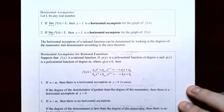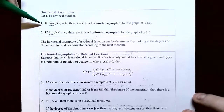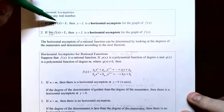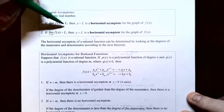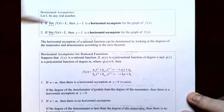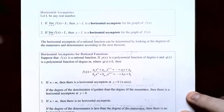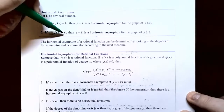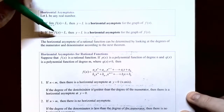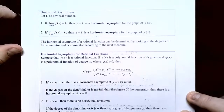If the limit as x approaches negative infinity of f(x) equals L, that means on the far left end of the graph, the y values are getting closer and closer to y equals L, giving a horizontal asymptote there. Similarly, if the limit as x approaches positive infinity equals L, the y values approach L on the far right end — so y equals L is a horizontal asymptote.